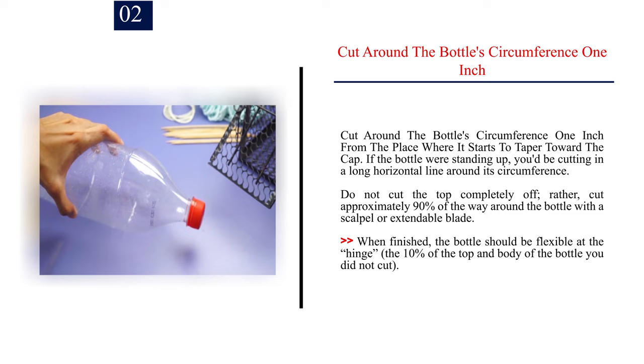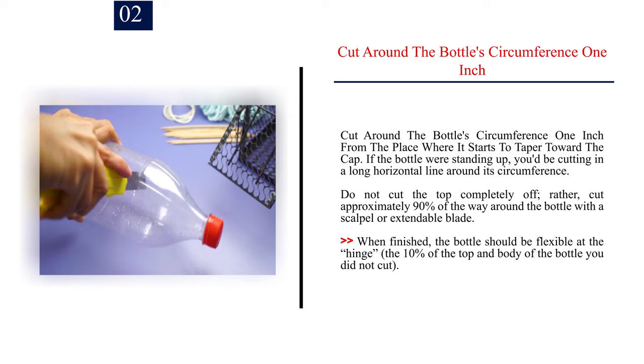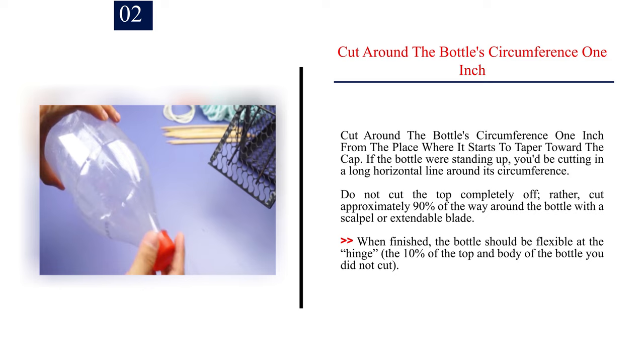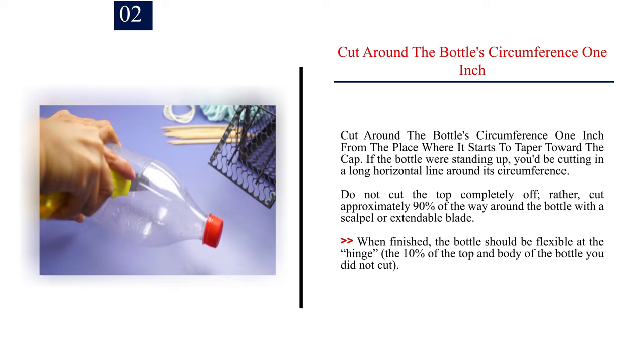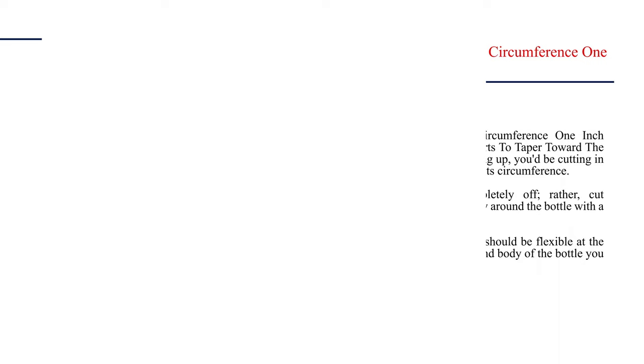Number 2: Cut around the bottle's circumference 1 inch from the place where it starts to taper toward the cap. If the bottle were standing up, you'd be cutting in a long horizontal line around its circumference. Do not cut the top completely off; rather, cut approximately 90% of the way around the bottle with a scalpel or extendable blade. When finished, the bottle should be flexible at the hinge, the 10% of the top and body of the bottle you did not cut.